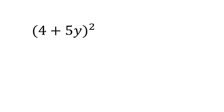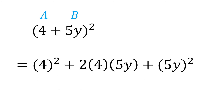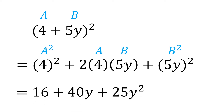If we have (4 + 5y) squared, then we have a as 4 and b as 5y. Now instead of using the FOIL method, just take the square of 4 plus twice the product of 4 and 5y plus the square of 5y, which is equal to 16 plus 40y plus 25y squared.